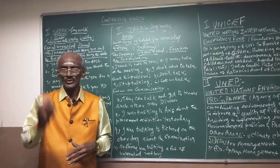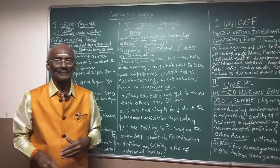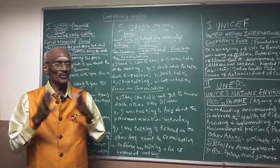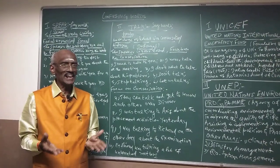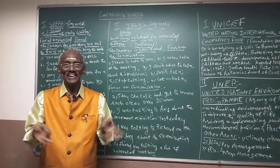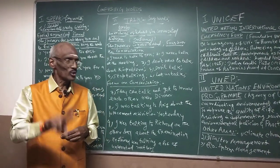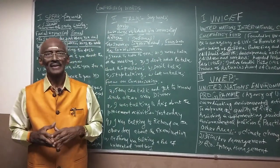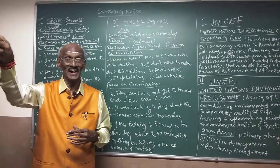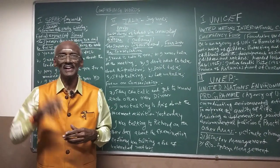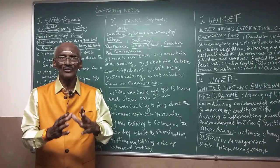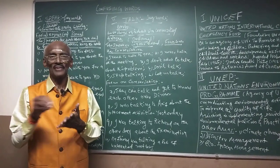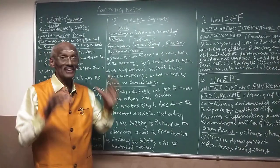I don't want to talk about this problem. Next circumstance — focus on conversation. Example sentences: They can talk and get to know each other over dinner or over lunch. I was talking to Arif about the placement activities yesterday. I was talking to Richard the other day about the examination.